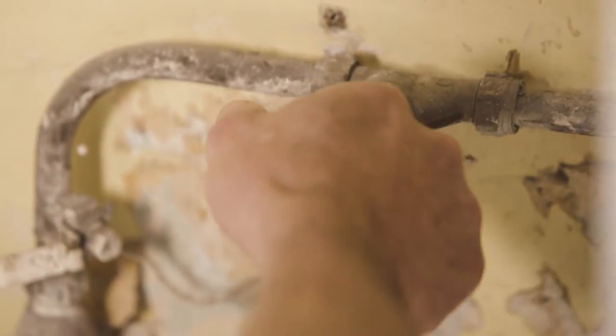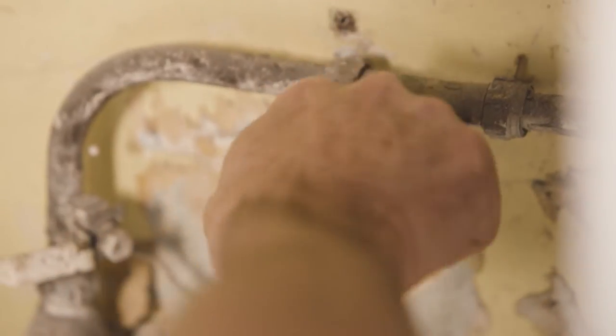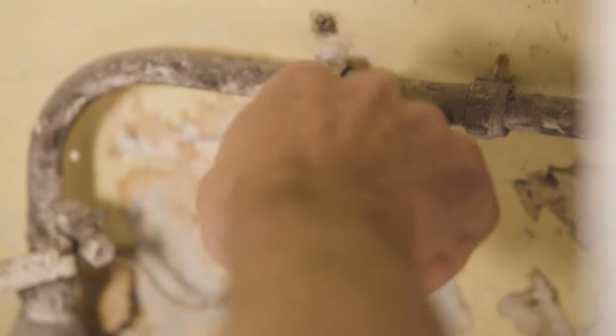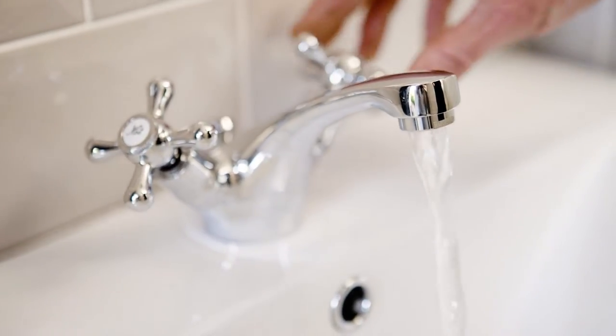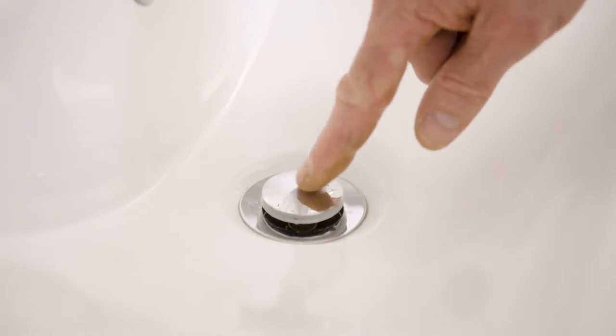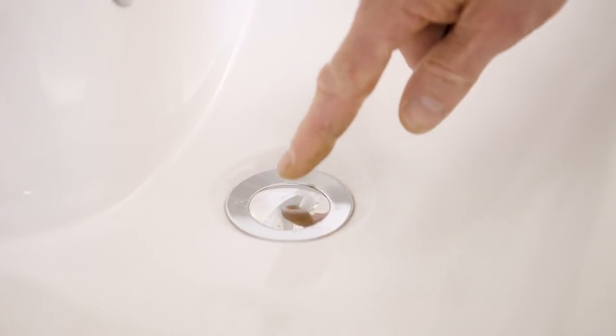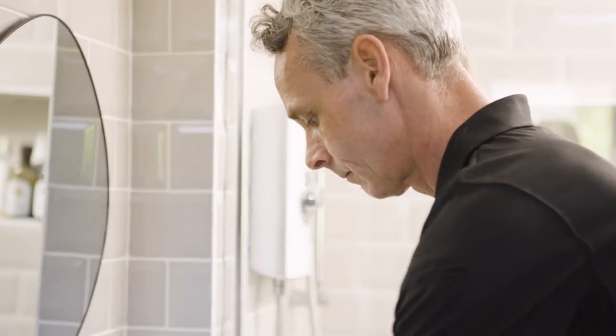Before you start, turn off the water supply using the stopcock, often found near the water supply pipes under the kitchen sink. Turn on the tap to release any water left in the top of the pipe, then put the plug in the sink. This will stop any parts from falling down the plug hole. We also recommend using an old rag or towel as a protective cover for your sink.